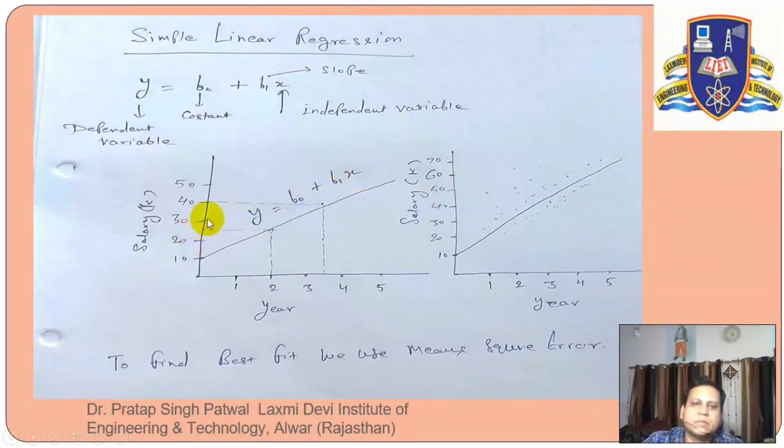Now we will show it like this scatter chart. You can see here is our salary, here is our year of experience. Now how do we calculate this? We have a concept of overfitting. But if we want to find the best fit, we use the mean square error.